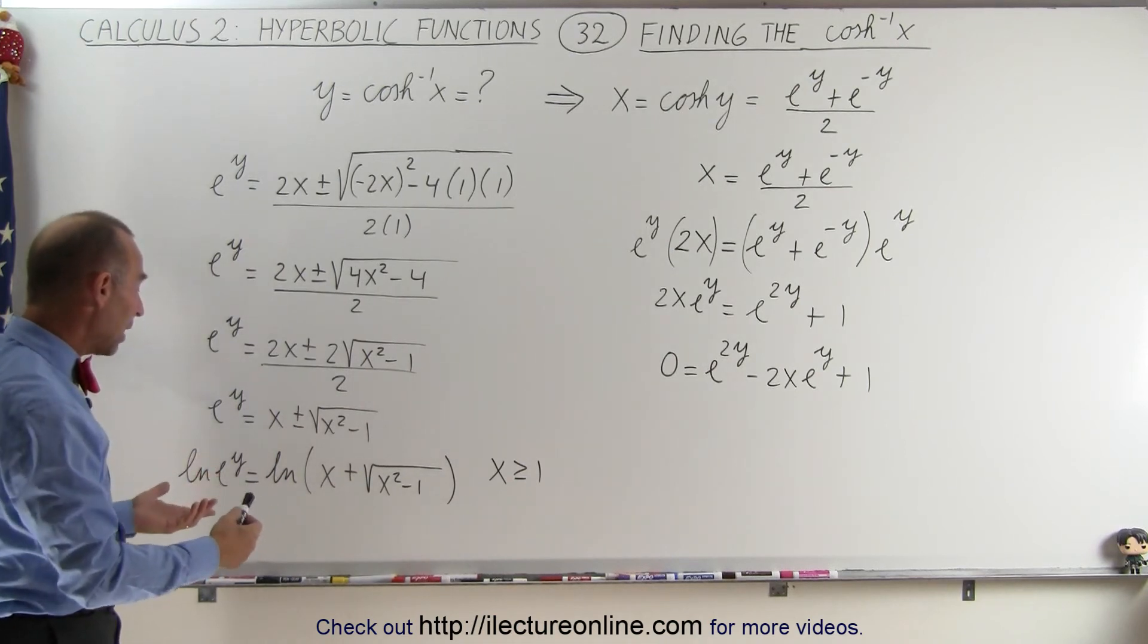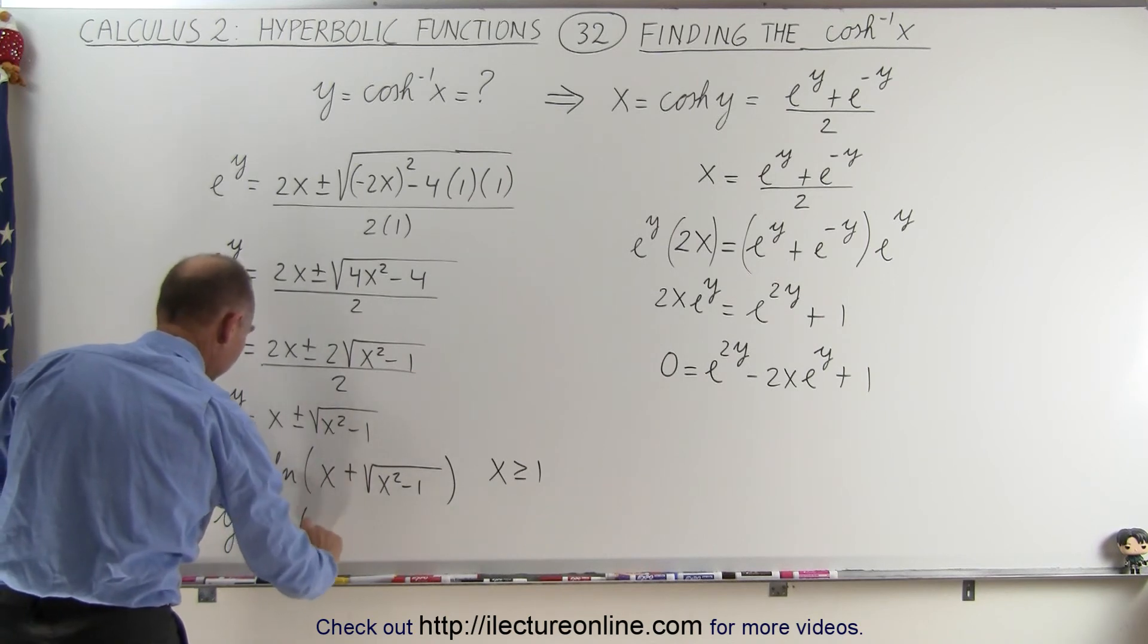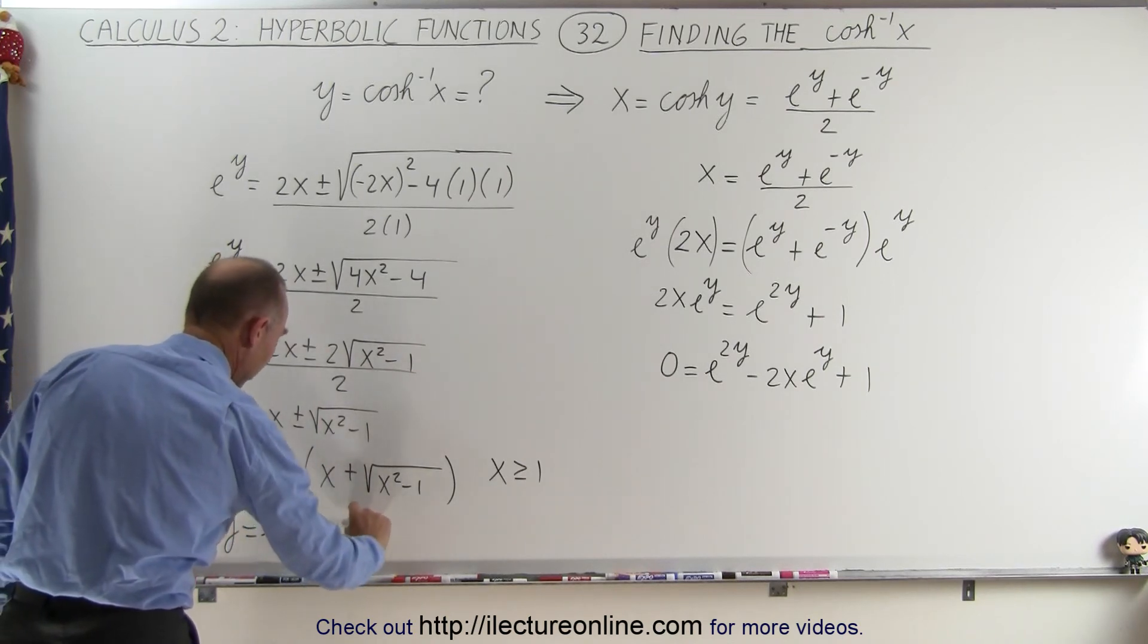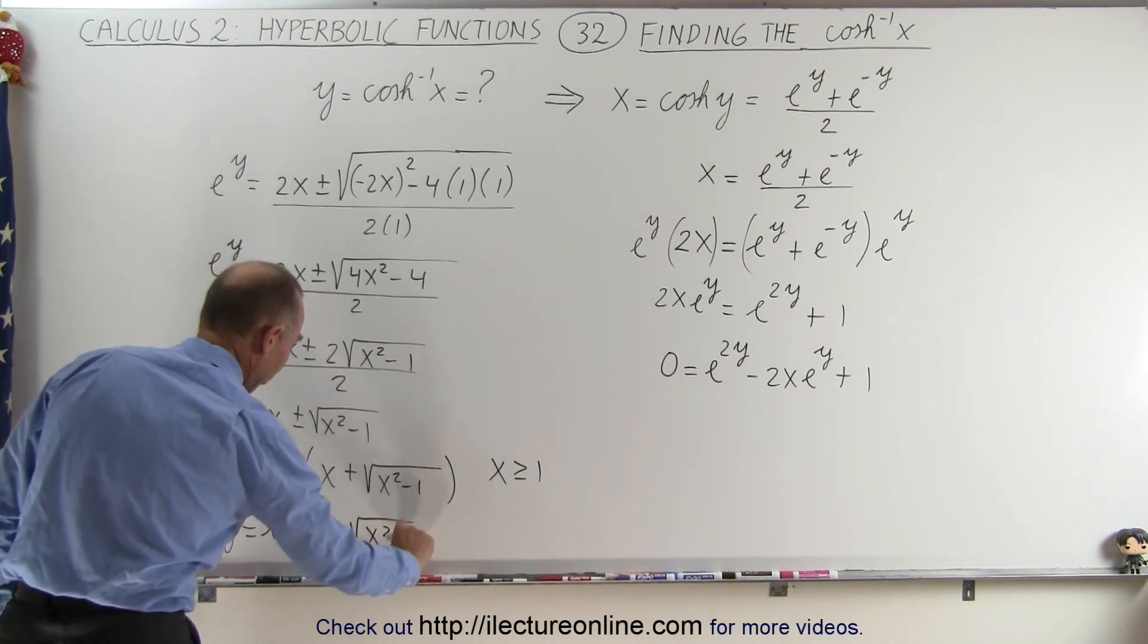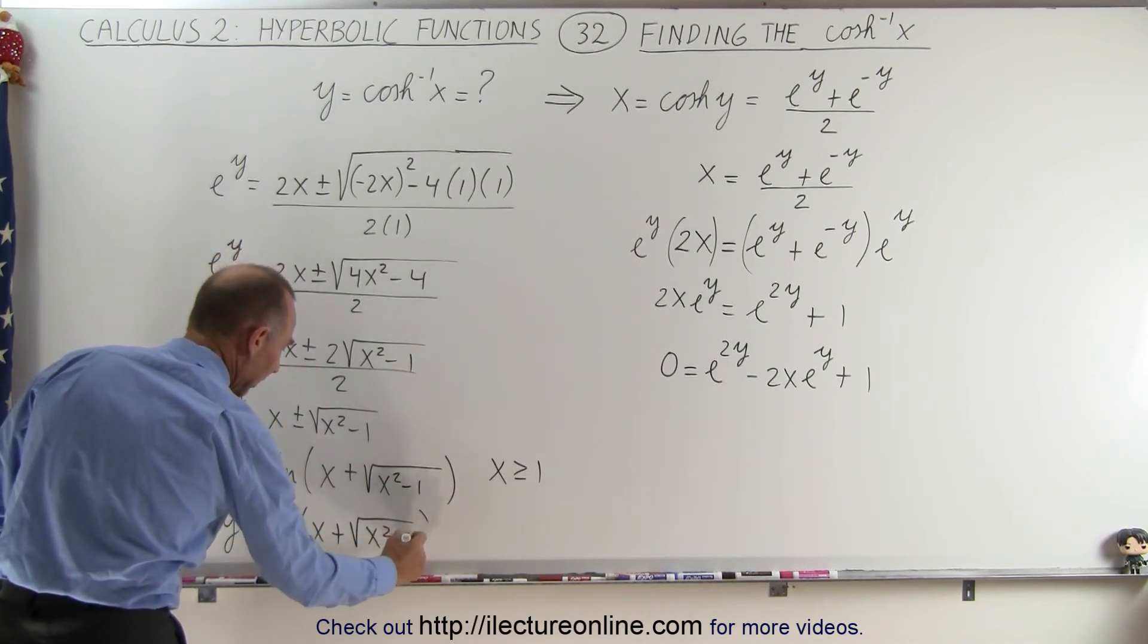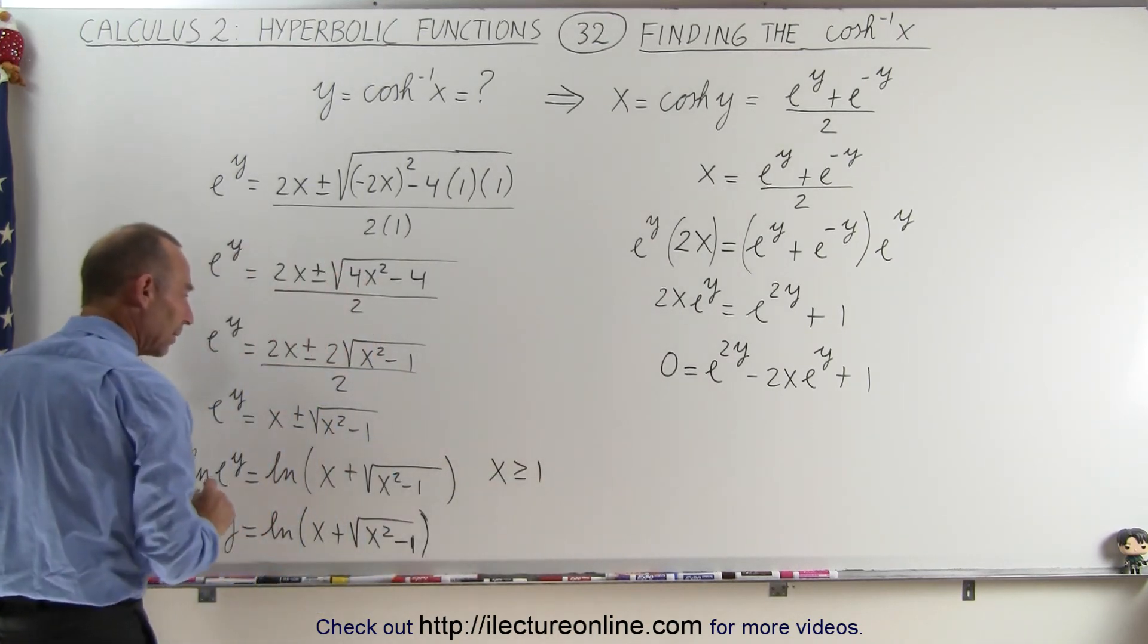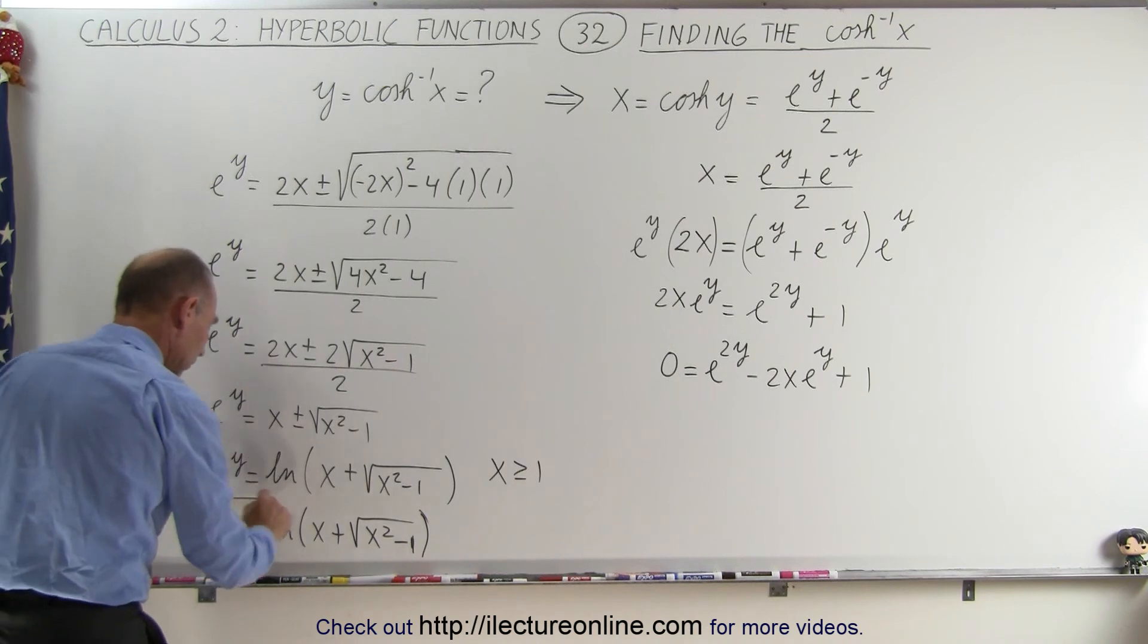And so finally, we now take the natural log of both sides, so we end up with y is equal to the natural log of x plus the square root of x squared minus 1. We don't need absolute value signs, because we know x is going to be greater than or equal to 1. So there we go.